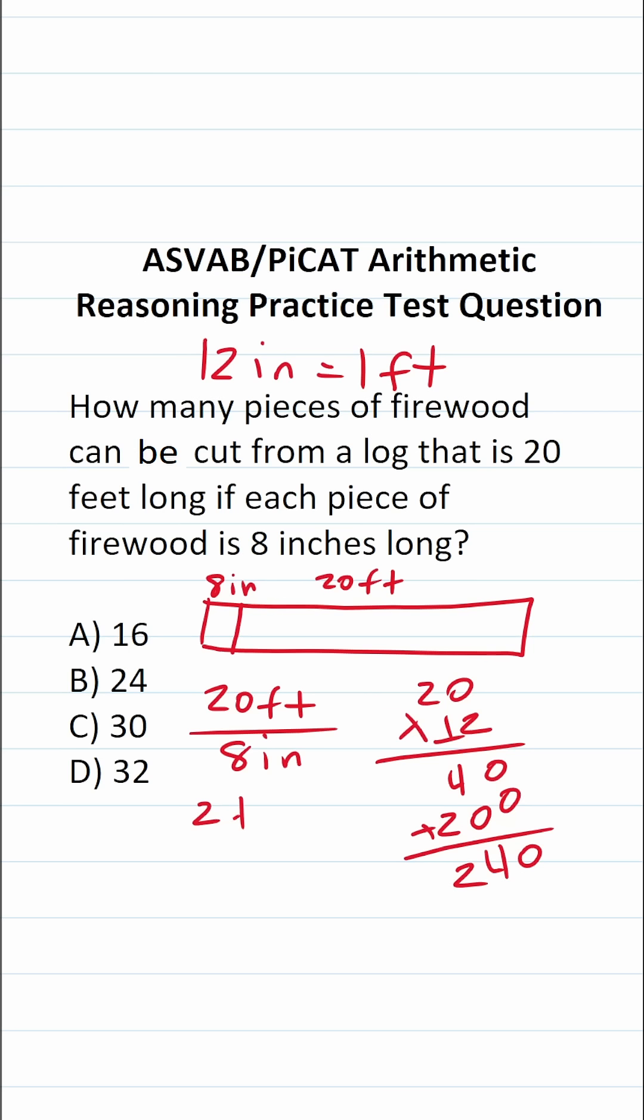So this becomes 240 inches over eight inches. Now that our units are the same, we can cross them out. What is 24 divided by eight? 24 divided by eight is three. That means 240 divided by eight is going to be 30.